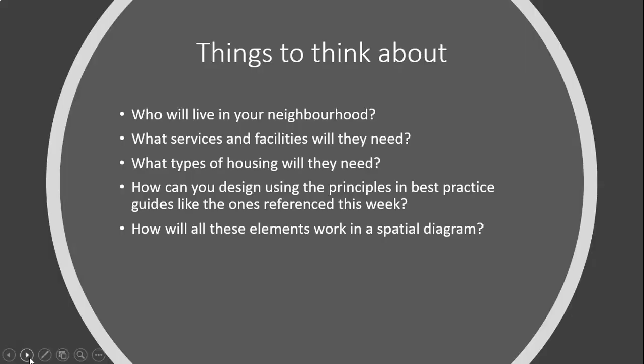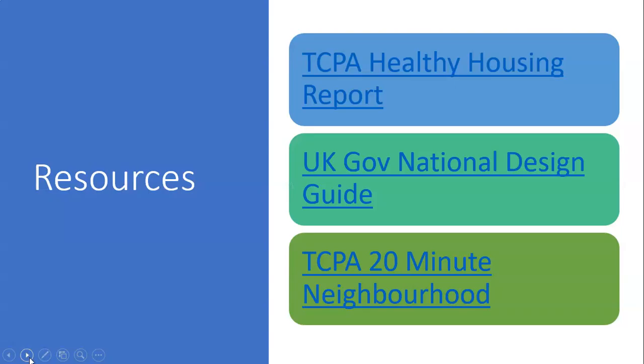When thinking about your neighborhood design and what you might be looking for in an optimum neighborhood, you need to think about who's going to live there, what services and facilities those people might need, what types of housing they might need, and how you can take some of these best practice guides and use those principles to think about how you're actually going to design your neighborhood. Think about how those elements would work spatially — last week we thought a lot about the 800 meters and the arrangement of space, so now you're thinking about what you're actually going to put in that area in terms of housing and services. Here are the three main practice guides referenced this week: two Town and Country Planning Association guides and the UK Government National Design Guide.